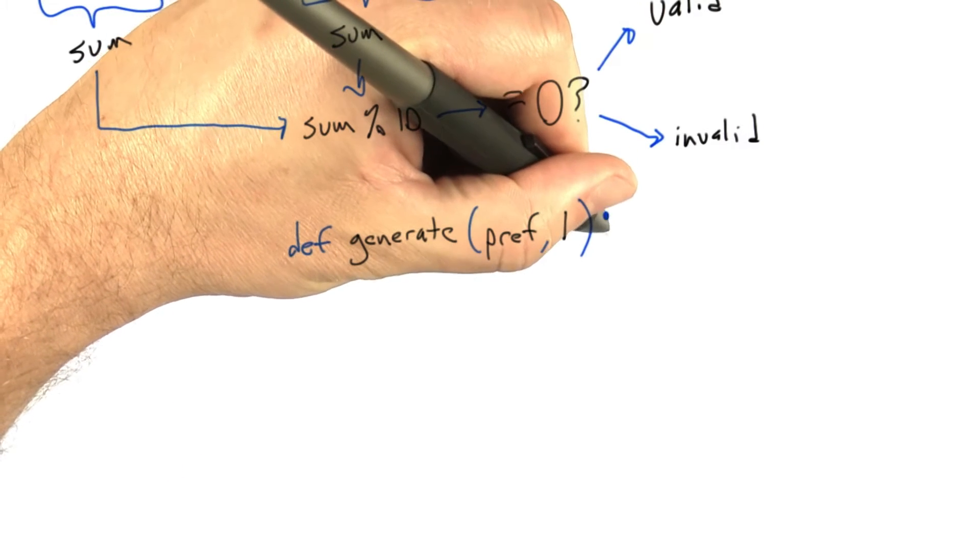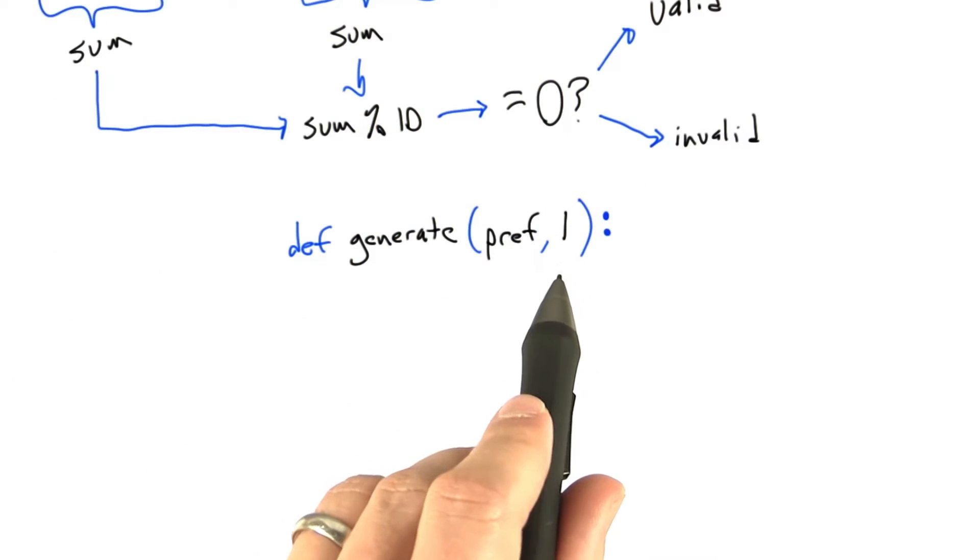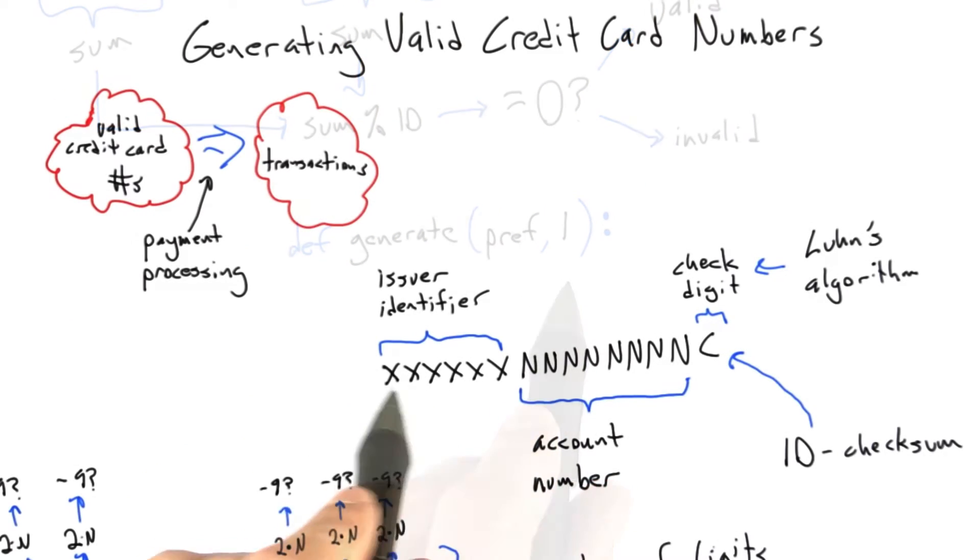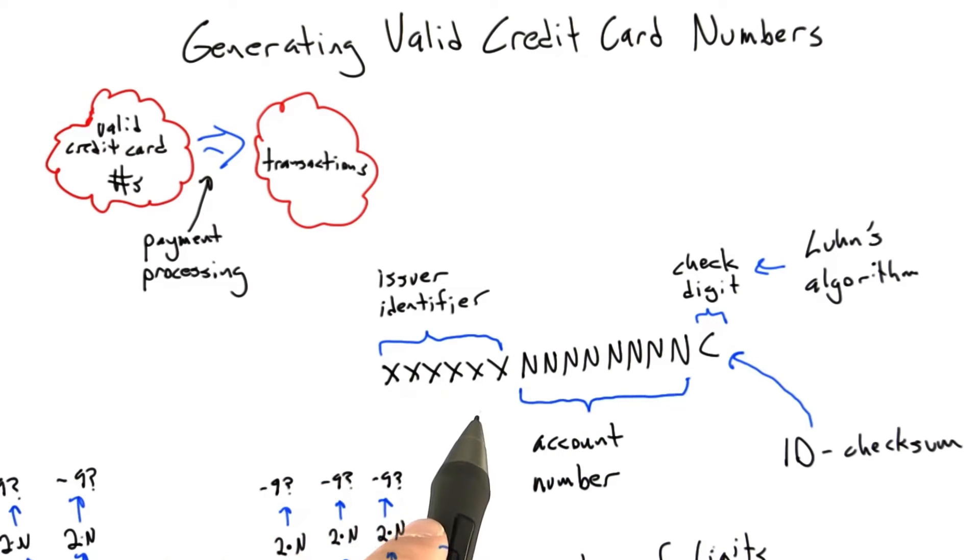The second parameter is the length, an integer that determines the total length in digits of the credit card number you'll generate. Your job is to construct a credit card number with the given issuer identifier or prefix, the required total length, and completely random integers in the middle.